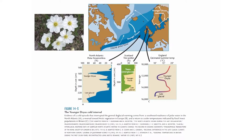This is a somewhat detailed figure, but we will go through it carefully. First of all, this flower is called Dryas. It is a cold Arctic flower that grows when temperatures are below a certain threshold, and it provided a critical indication of how the deglaciation had some hiccups as we were coming out of the last ice age.